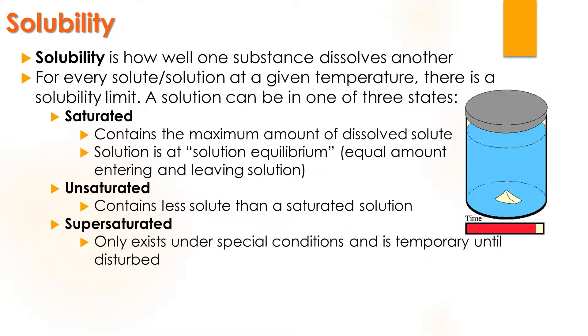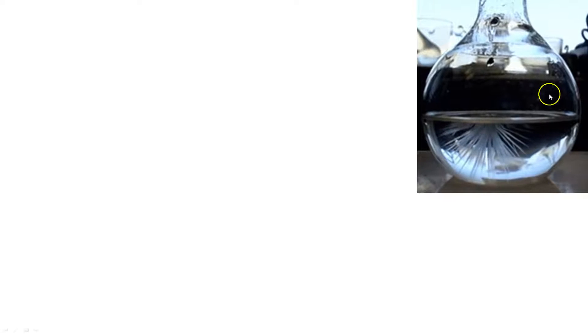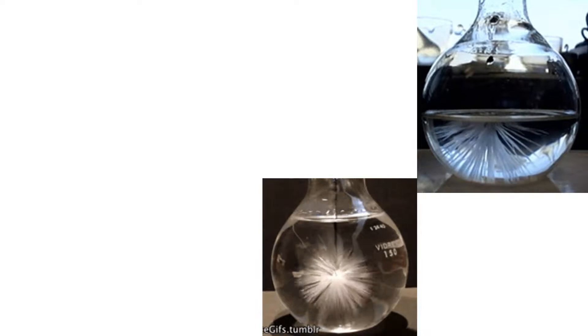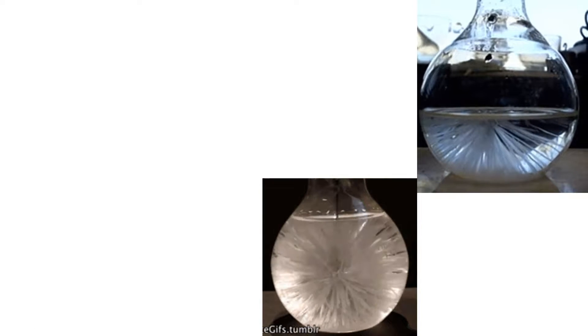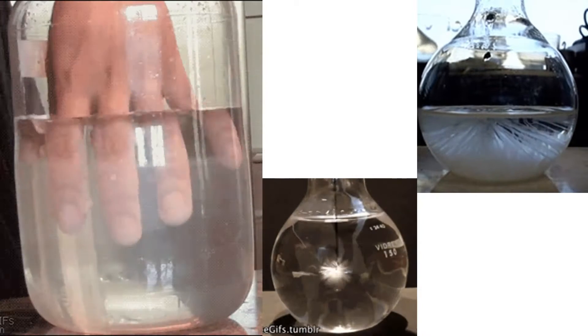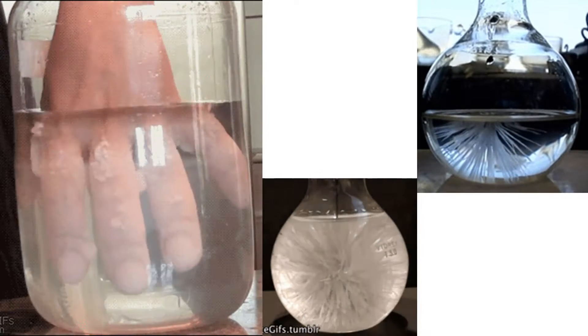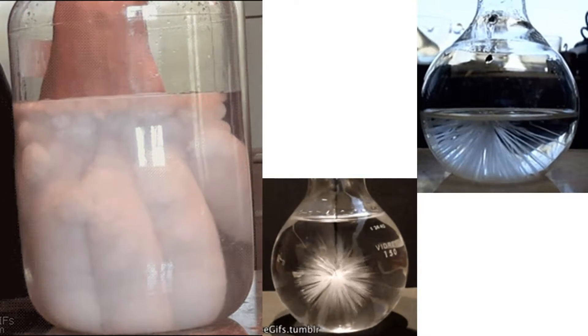And finally, supersaturated. That only exists under special conditions and it is temporary until you disturb it. Here are some examples of supersaturated solution. When you put something in, there's some sort of nucleation site and all of a sudden all that stuff is going to crystallize out of the solution — it almost looks like a crystal is growing. If you put a nucleation site in like a pencil, the crystals are going to grow off of that. In another example, a person put their hand inside a supersaturated solution and the crystals are growing right off of it.